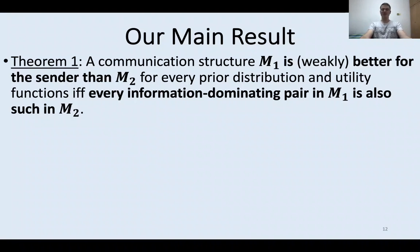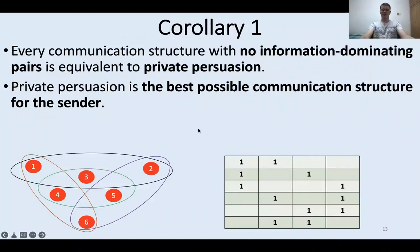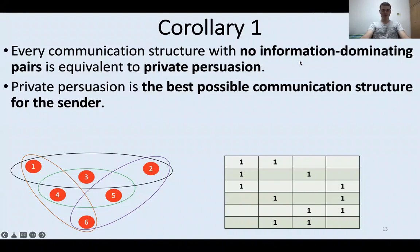Specifically, this is our main result: a communication structure M1 is robustly better for the sender than another communication structure M2 — regardless of the prior distribution and utility functions of both the sender and the receivers — if and only if every information-dominating pair in M1 is also an information-dominating pair in M2. For example, considering communication structures that contain no information-dominating pairs at all, the simplest is private persuasion, where each receiver has her own private channel. It follows from our main result that private persuasion is the best possible communication structure for the sender.